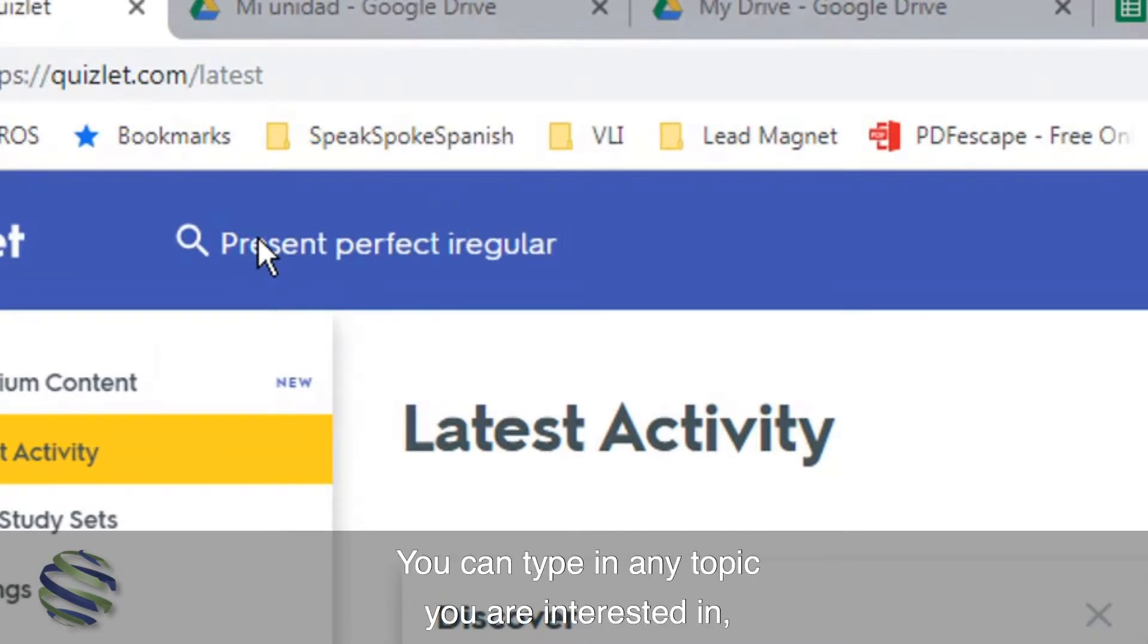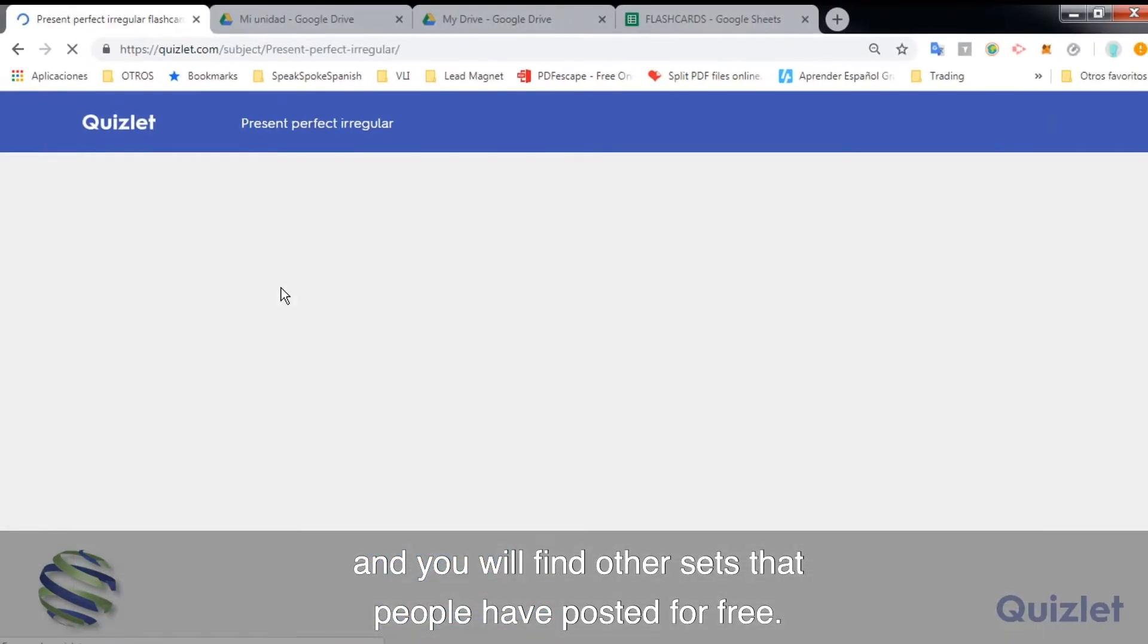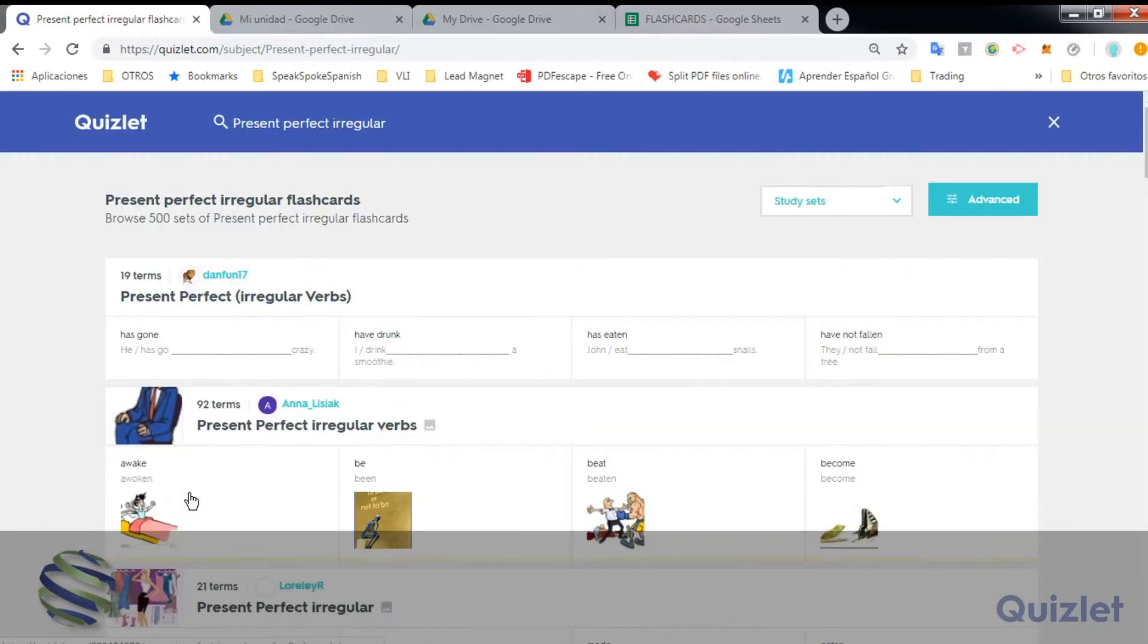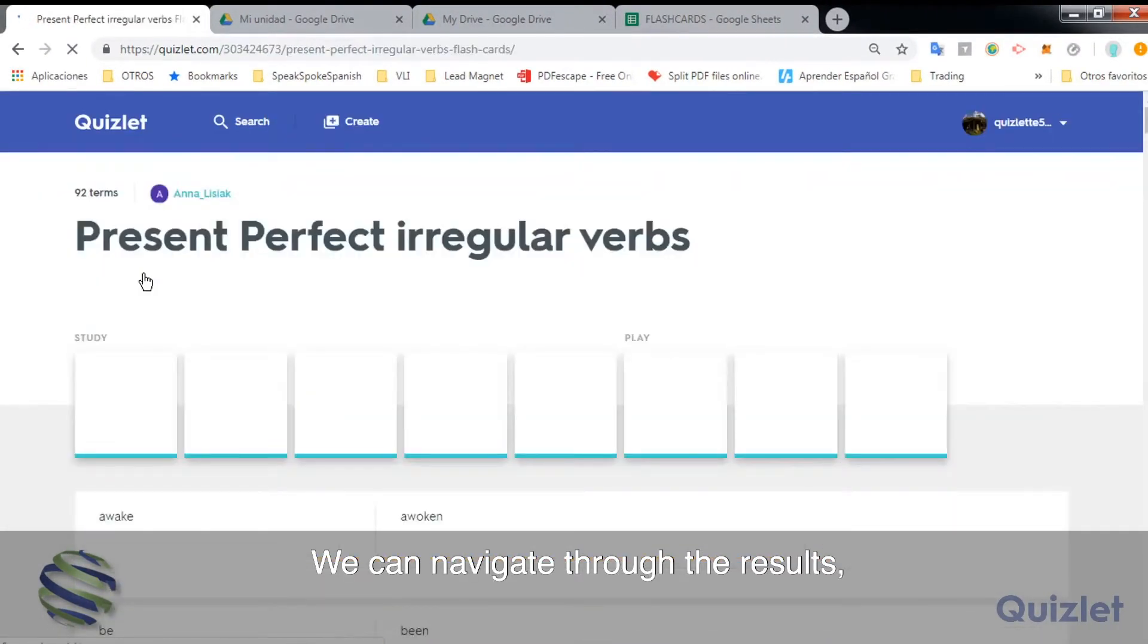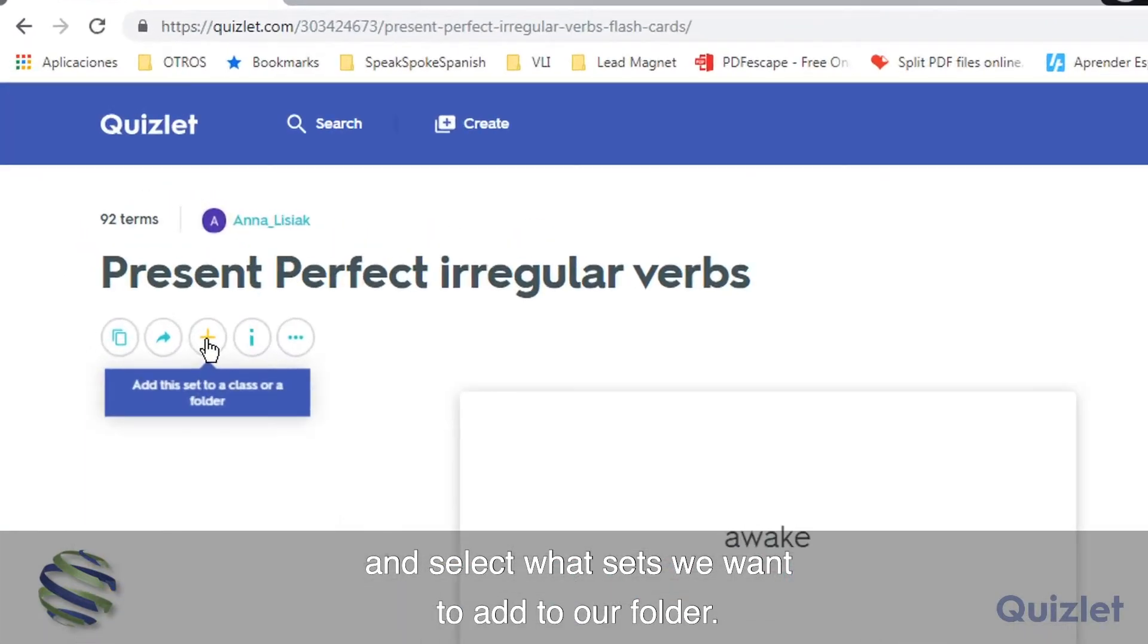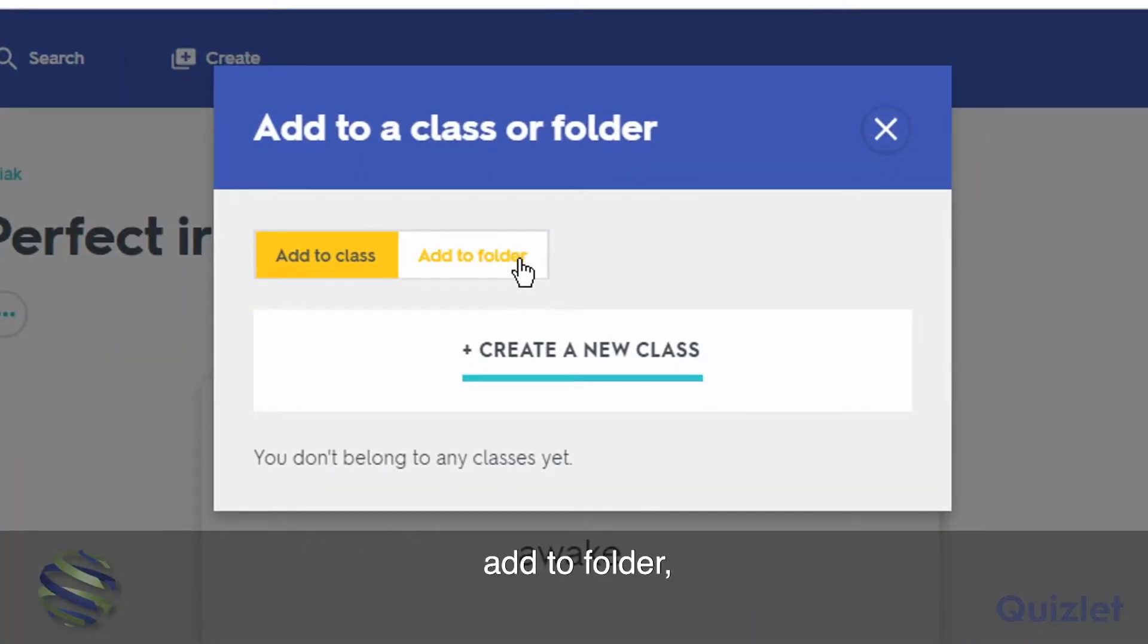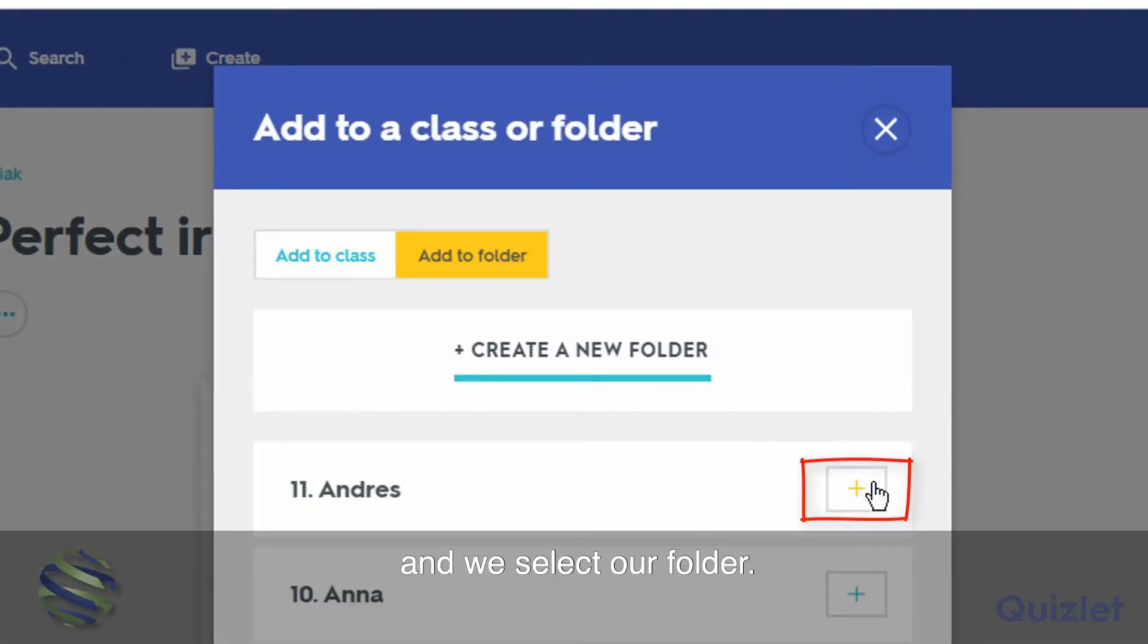You can type in any topic you are interested in and you will find other sets that people have posted for free. We can navigate through the results and select what sets we want to add to our folder. To add them we press this plus sign, add to folder, and we select our folder.